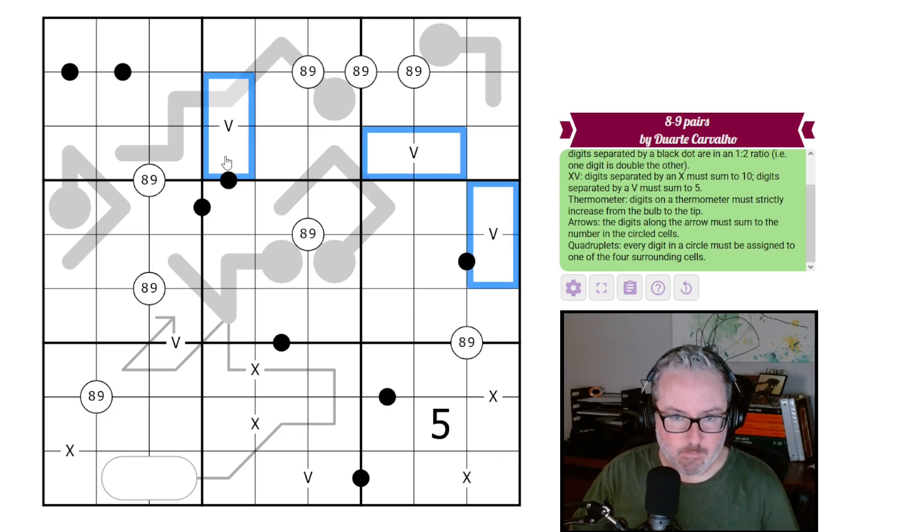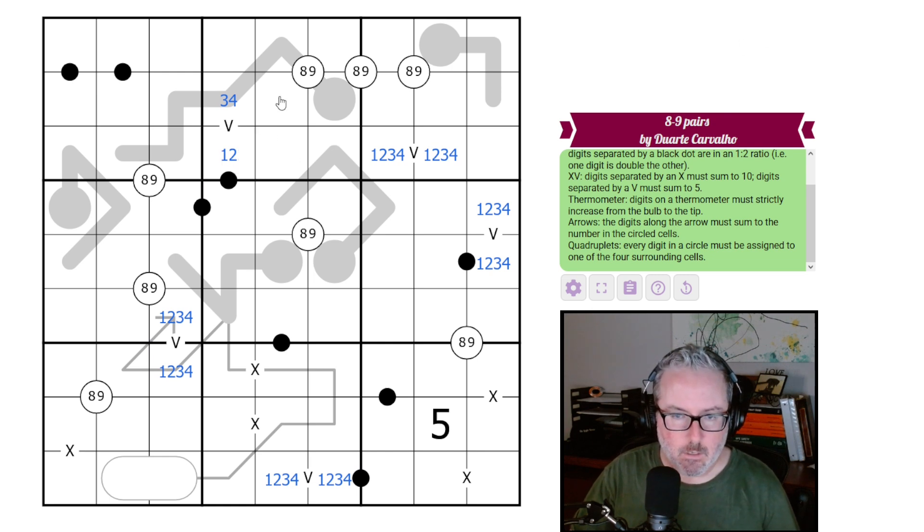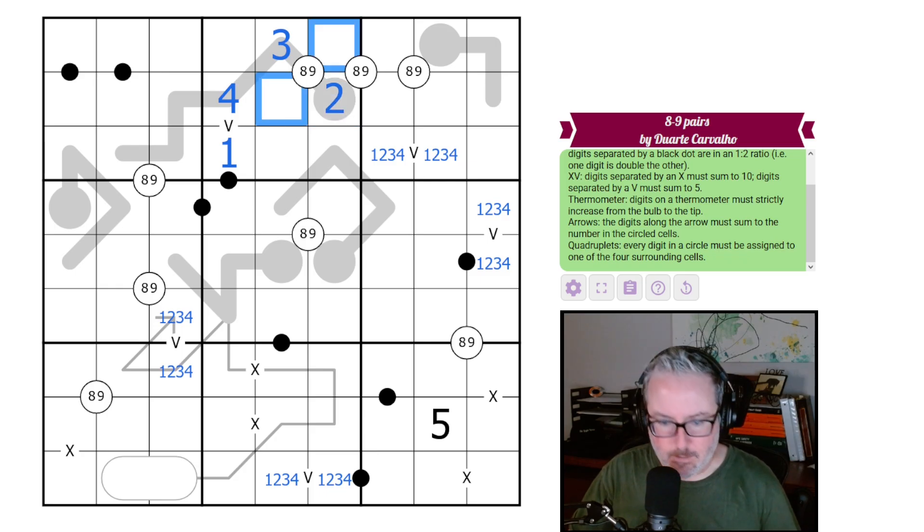All right. I'm going to start with my Vs. I tend to do that. I just like to get them in and out of the way and see what they bring. Like this can't be a one or a two, so this can't be a three or a four. This then is a two, three, one, two. So we get a one, two pair. So that just means this is three, four, one, two. This is an eight, nine because we have our quad there.